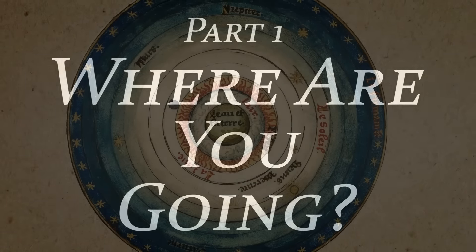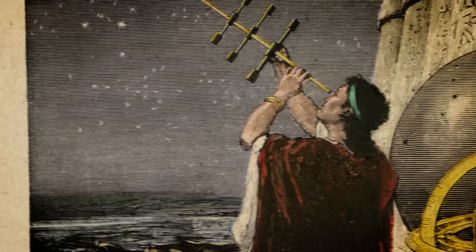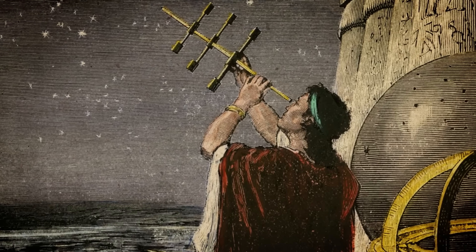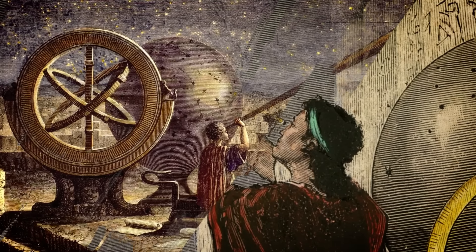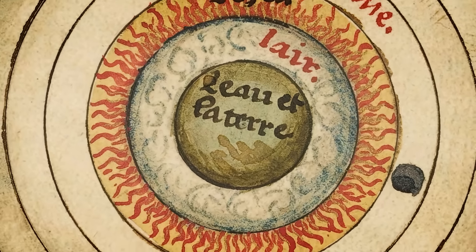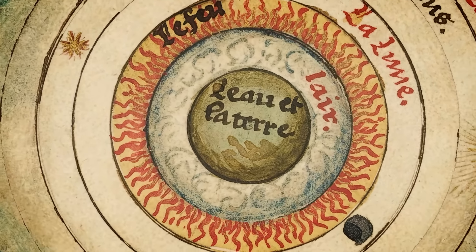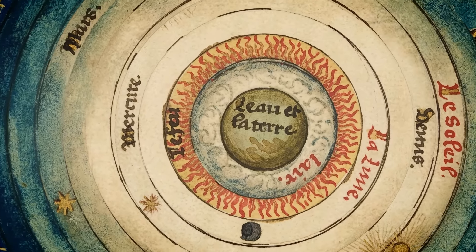Our universe is defined by motion. And one way to describe the history of science is through our increasing awareness of the restlessness of the cosmos. For millennia, the brightest scientific minds in Europe and the Middle East believed that the Earth was perfectly still and that the heavens revolved around it. Those early astronomers busied themselves with attempts to explain and predict the motion of other objects.